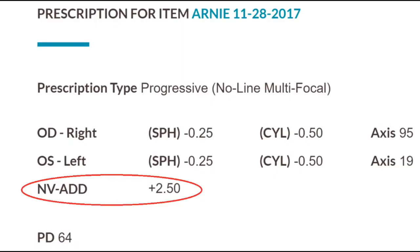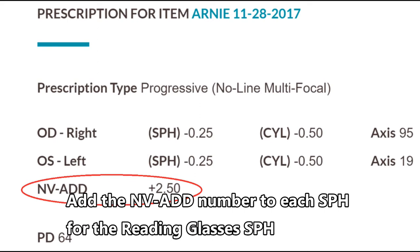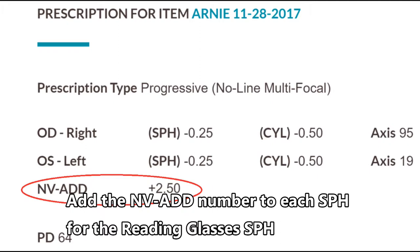This is a sample full prescription. My normal glasses are progressive lenses and contain the information needed also for reading glasses. What you want to focus on is this number I've outlined in red — it says NV-ADD, an abbreviation for near vision ADD. They add 2.5 diopters of lens curvature to allow me to focus clearly at a 14-inch reading distance. If you're getting over-the-counter non-prescription reading glasses from a pharmacy, your calculations are done.